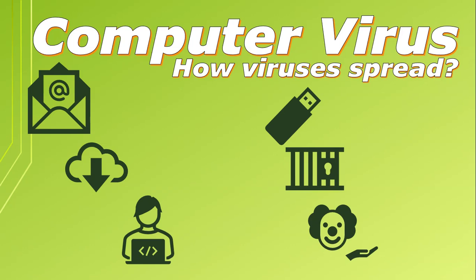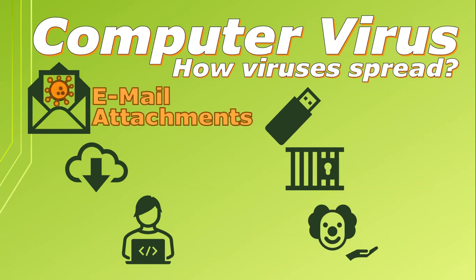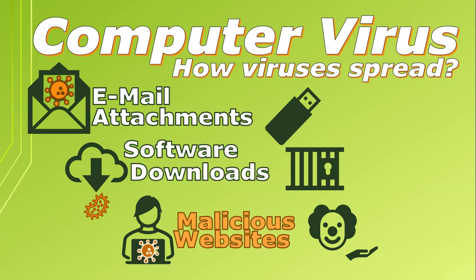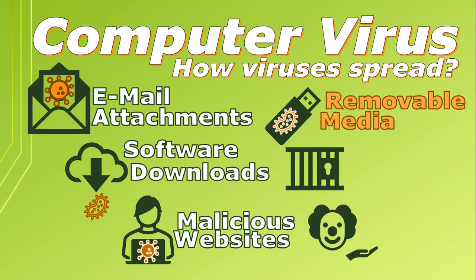So how do you get a computer virus? There are several ways in which a computer virus can infect a computer. Viruses can be attached to emails and sent to users who may download the attachment. Downloading software from untrusted sources or torrents can result in downloading a virus or program infected with malicious software, also referred to as malware. Malicious websites can download the virus automatically when you view their web pages. Viruses can also spread through removable media such as USB flash drives or copying files from a friend's external hard drive.